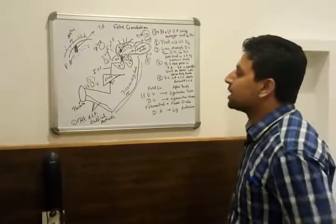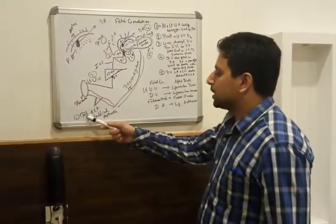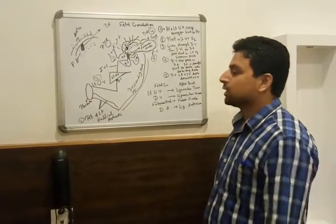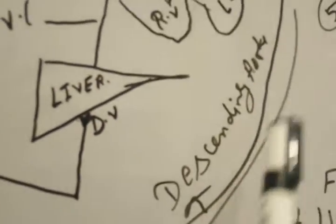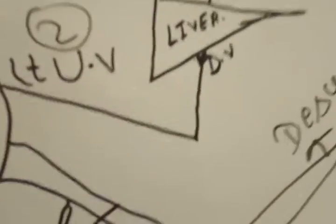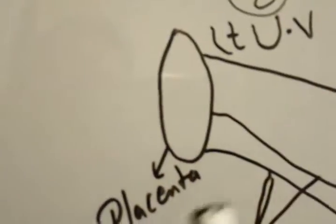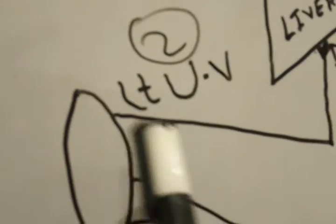Let's start our lecture, guys. It's very necessary. In placental circulation, there are right and left umbilical arteries. Right and left umbilical arteries carry deoxygenated blood from the descending aorta. Then it goes into the placenta. The placenta purifies the blood and transmits it into the left umbilical vein. The umbilical vein carries oxygenated blood in fetal circulation.